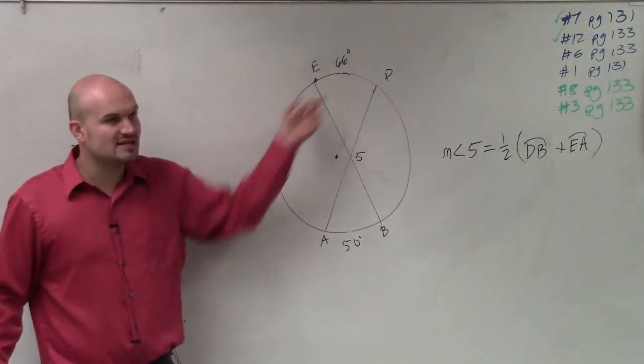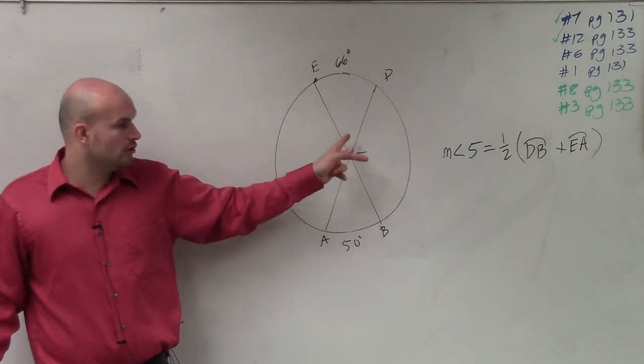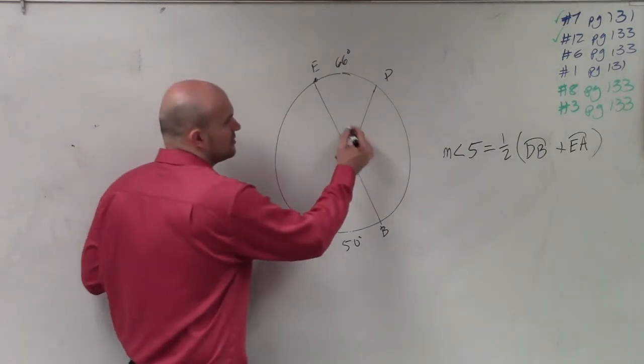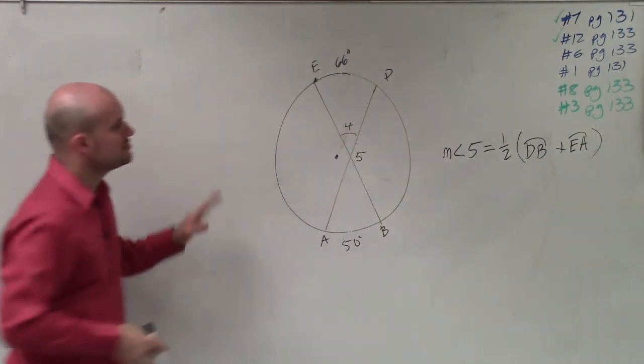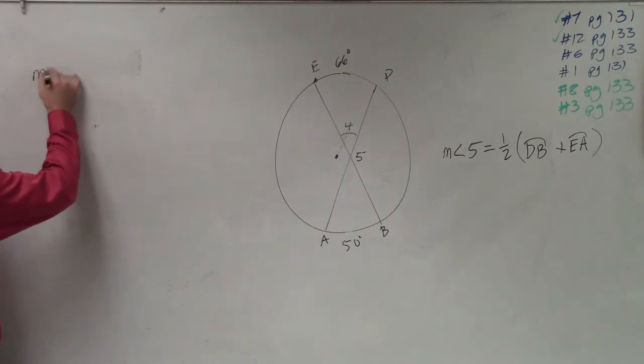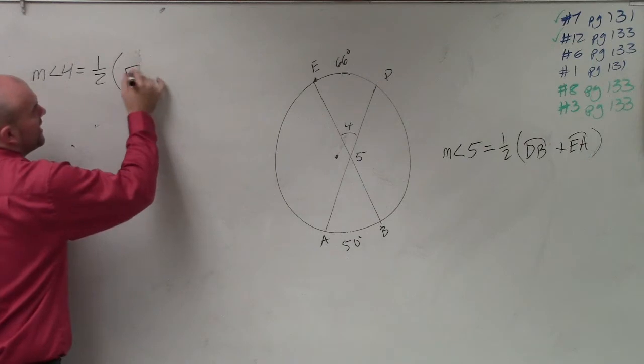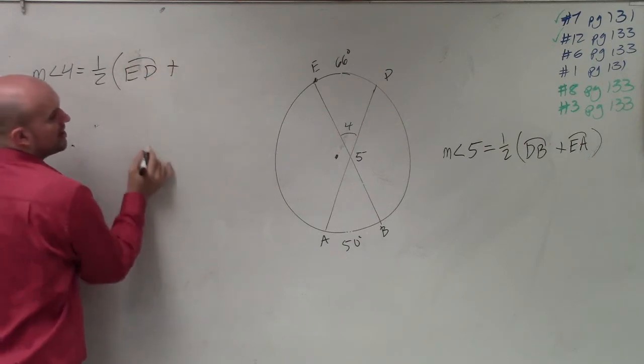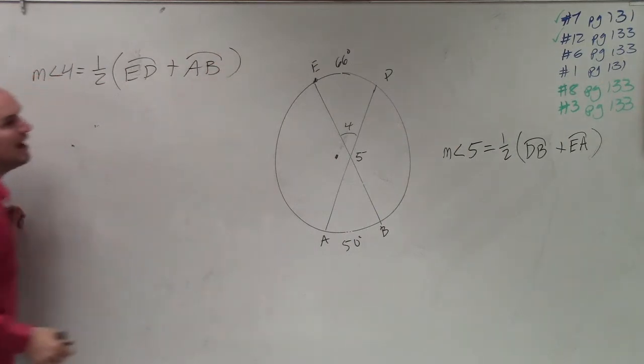They only give us these arcs. So what I can do, though, is I can find the angle over here. And let's call that angle four. The question is, what is angle five? Well, let's figure out what angle four is. So to figure out angle four, I can say measure of angle four is equal to 1 half the sum of arc ED plus arc AB. And I'll show you why that's going to be helpful.